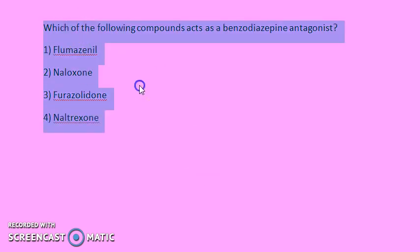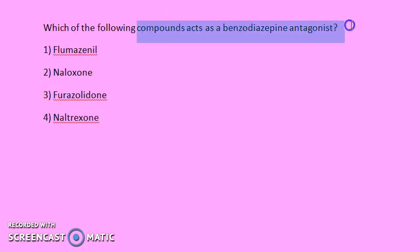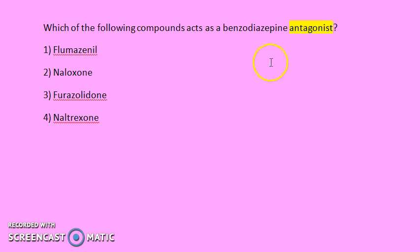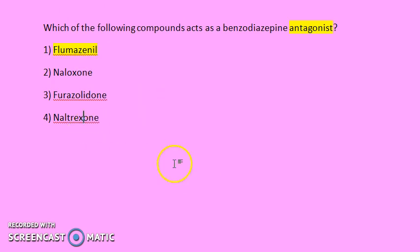Fifth question: which compound acts as a benzodiazepine antagonist? The answer is flumazenil — flumazenil is the benzodiazepine antagonist.